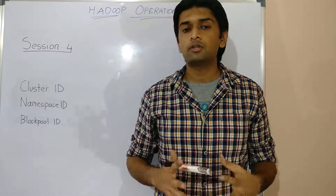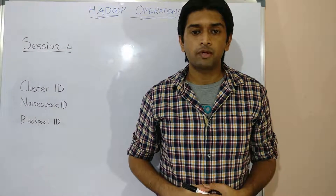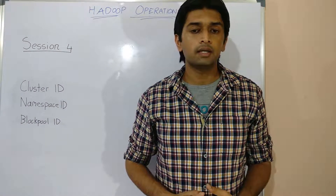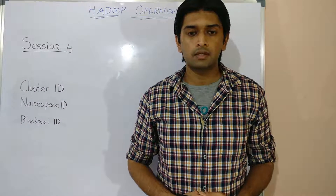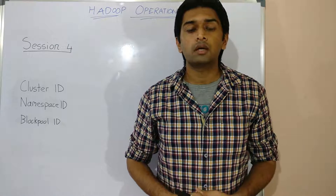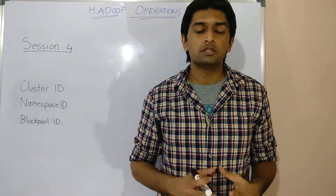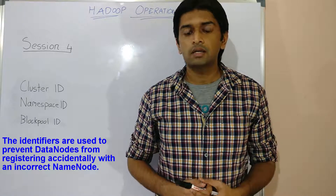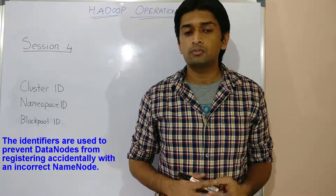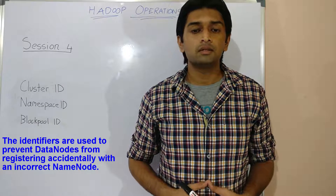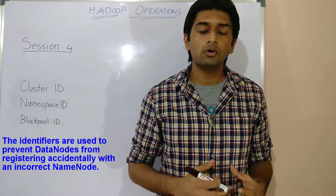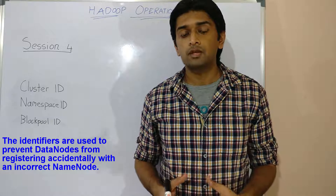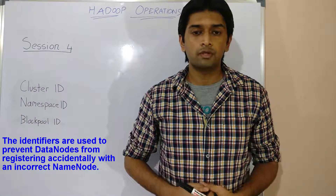The cluster ID, block pool ID, and namespace ID are unique identifiers of an HDFS cluster. These identifiers are used to prevent a data node from accidentally registering with the wrong name node — one that is part of a different cluster or a different namespace.